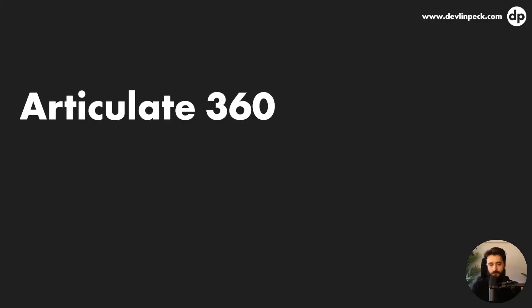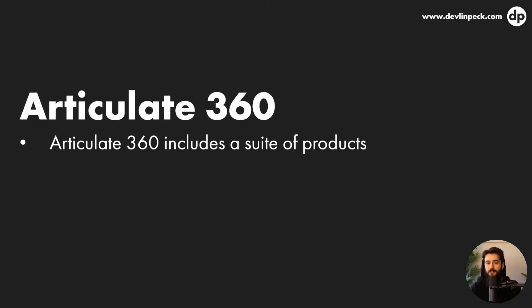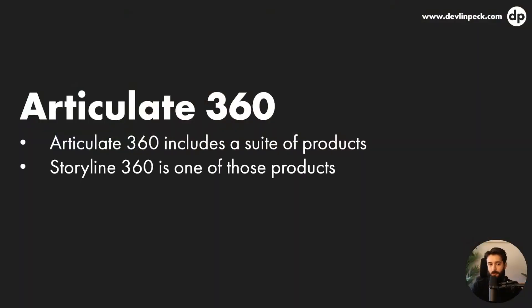So let's dive in. First, let's talk about Articulate 360 because Articulate 360 is different than Articulate Storyline 360 — people often get confused about this. Articulate 360 includes a suite of products. If you're familiar with the Adobe programs, it's kind of like Articulate 360 is like the Adobe suite, which is made up of Illustrator, Photoshop, and all these different tools that you get access to. Same thing with Articulate 360 — you get access to Storyline 360, Rise 360, and all sorts of other products that Articulate the brand has created.